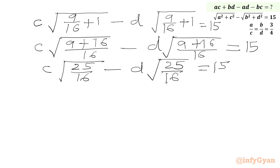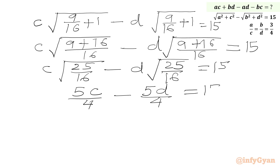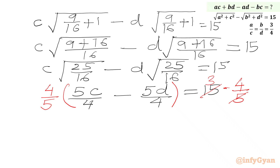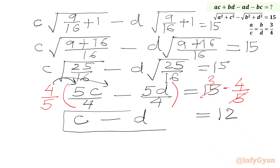Taking the LCM inside the radicand: 9 plus 16 is 25, so we get c times square root of 25/16 minus d times square root of 25/16 equal to 15. Square root of 25 is 5 and square root of 16 is 4, so we write 5c over 4 minus 5d over 4 equal to 15. Multiplying both sides by 4 over 5 gives c minus d equal to 12.